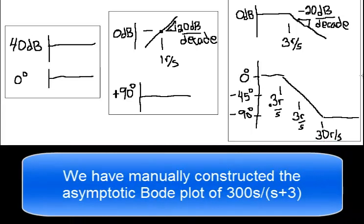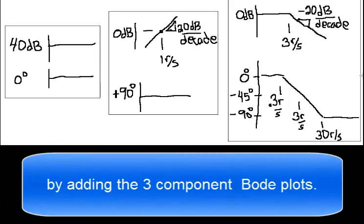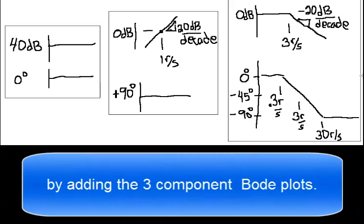We have manually constructed the asymptotic Bode plot of 300s over s plus 3 by adding the three component Bode plots.